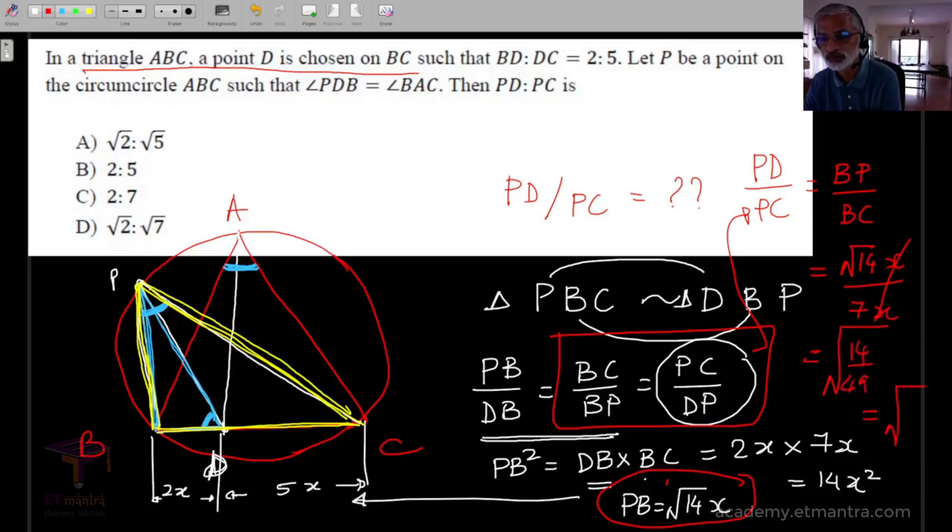And now we have all the information that you want from here. So root 14X divided by BC, which is 7X, and this is equal to root of 14 by 49, and that is equal to root of 2 by 7. So I repeat, once you spot the similar triangles, this is very straightforward.